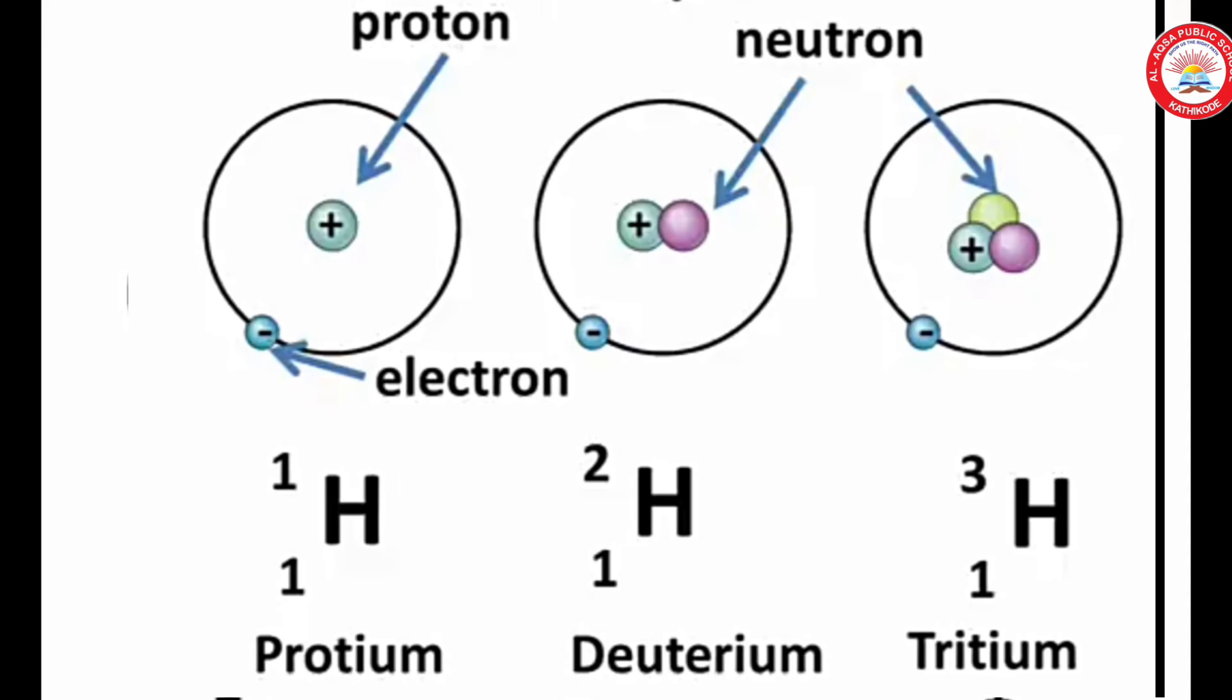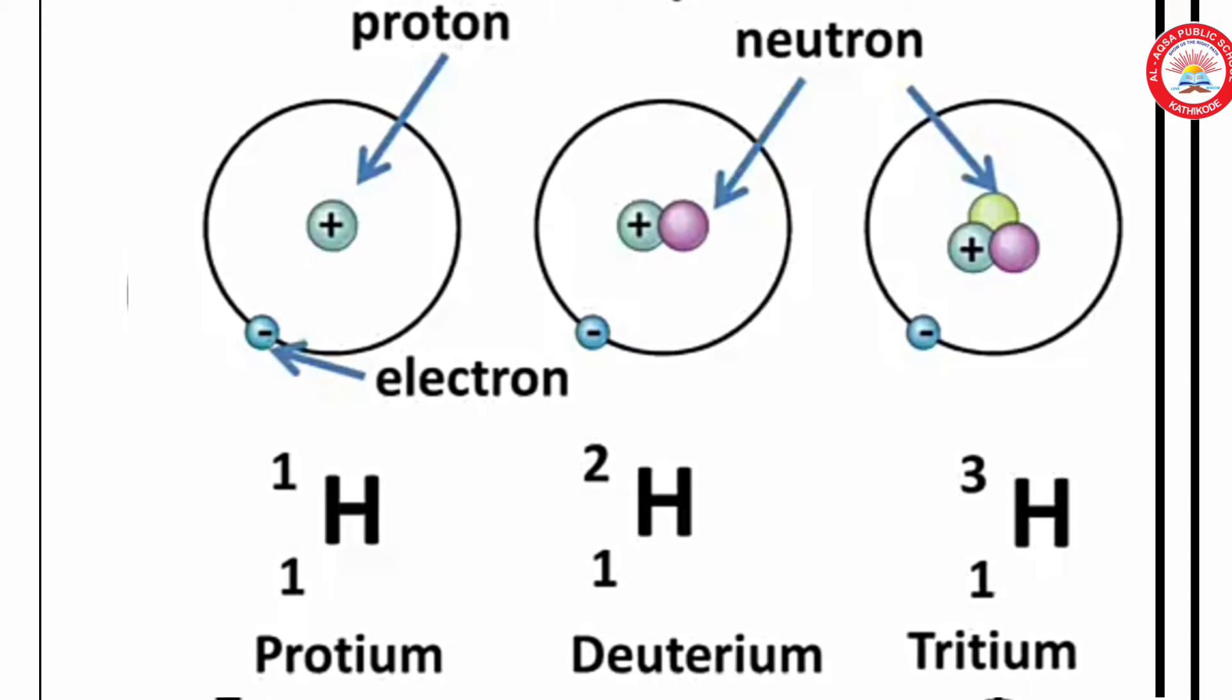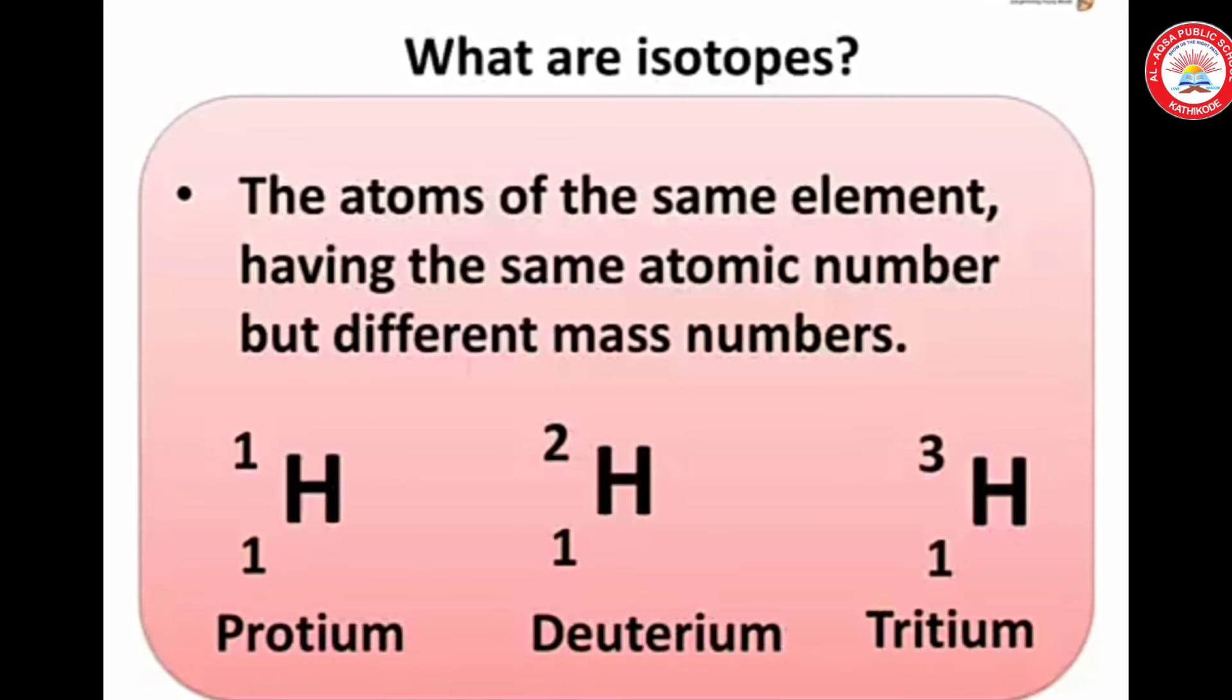The first one is known as protium, the second one deuterium and the third one tritium. So what are isotopes? The atoms of the same element having the same atomic number but different mass numbers.